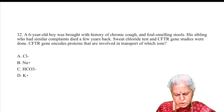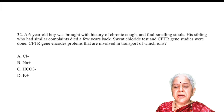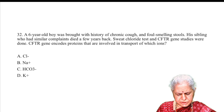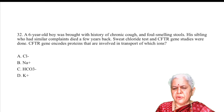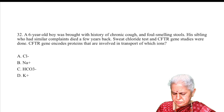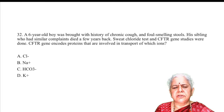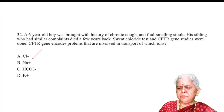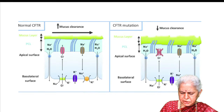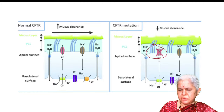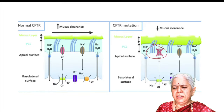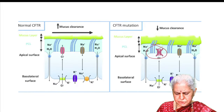A six-year-old boy presents with chronic cough, foul-smelling sputum and stool; sibling has similar complaints. Sweat chloride test done; CFTR gene is positive. The CFTR gene encodes which protein? Answer A — chloride channel. In cystic fibrosis, the chloride channel is blocked due to abnormality in the CFTR gene, which encodes a chloride channel protein.